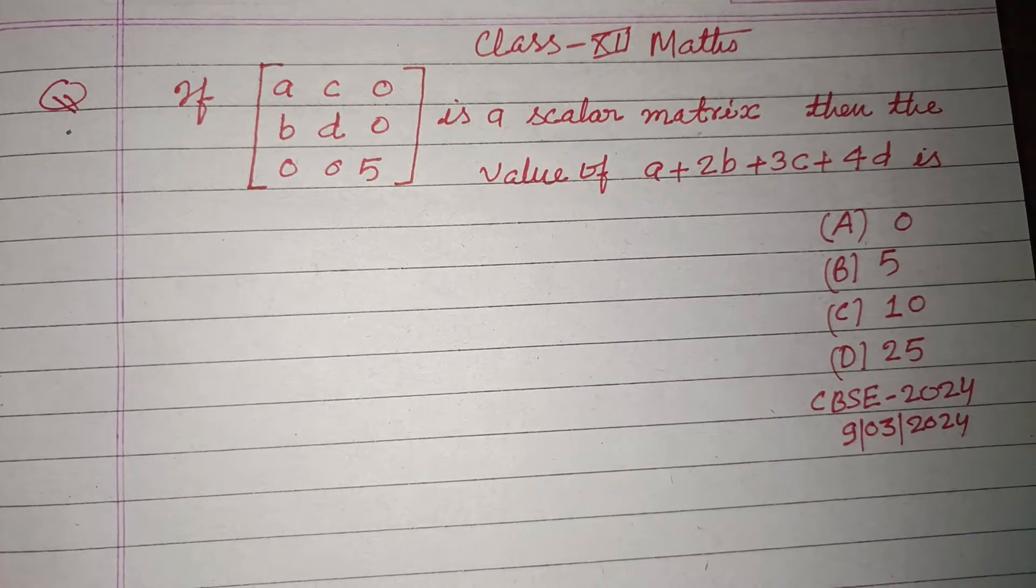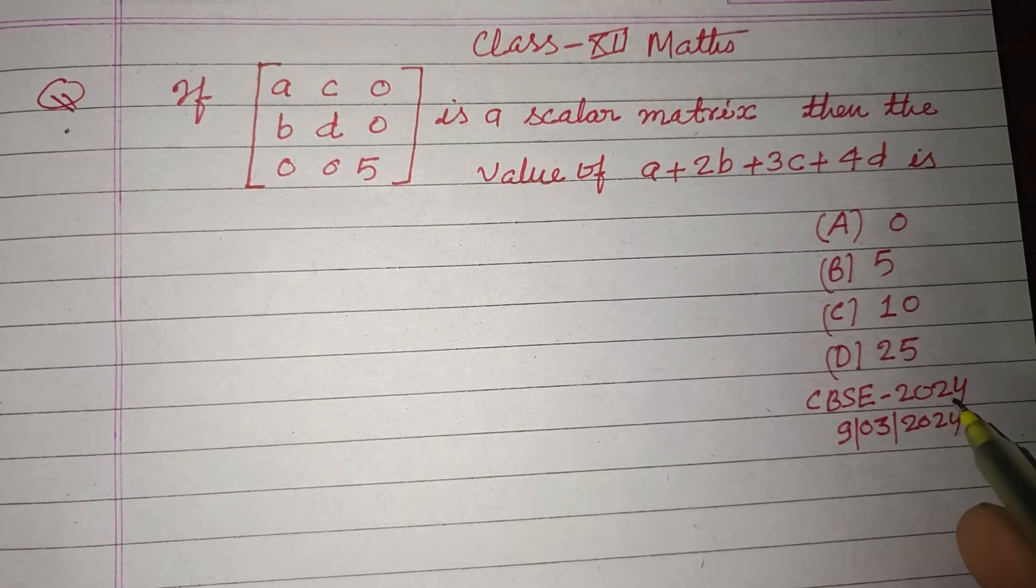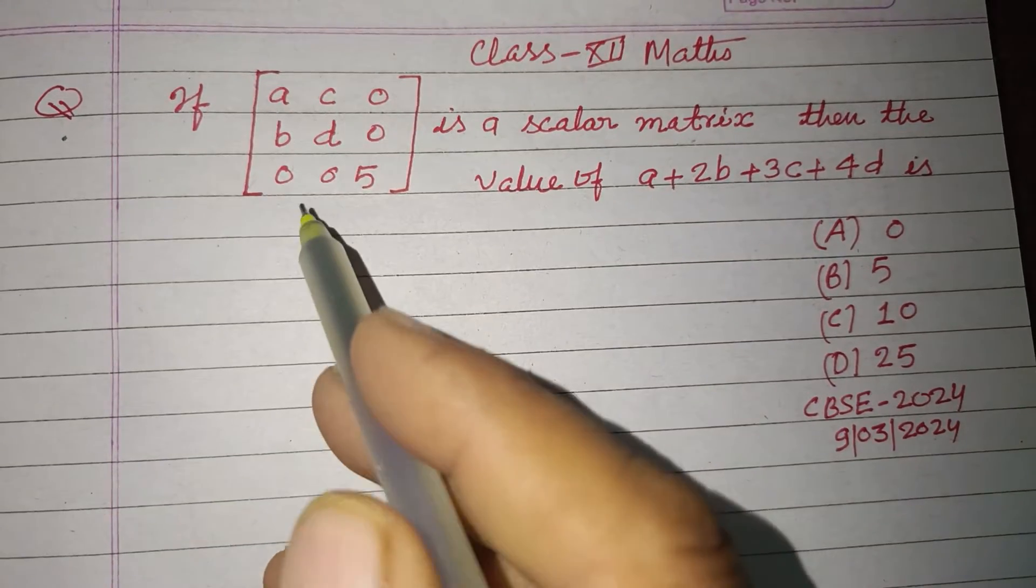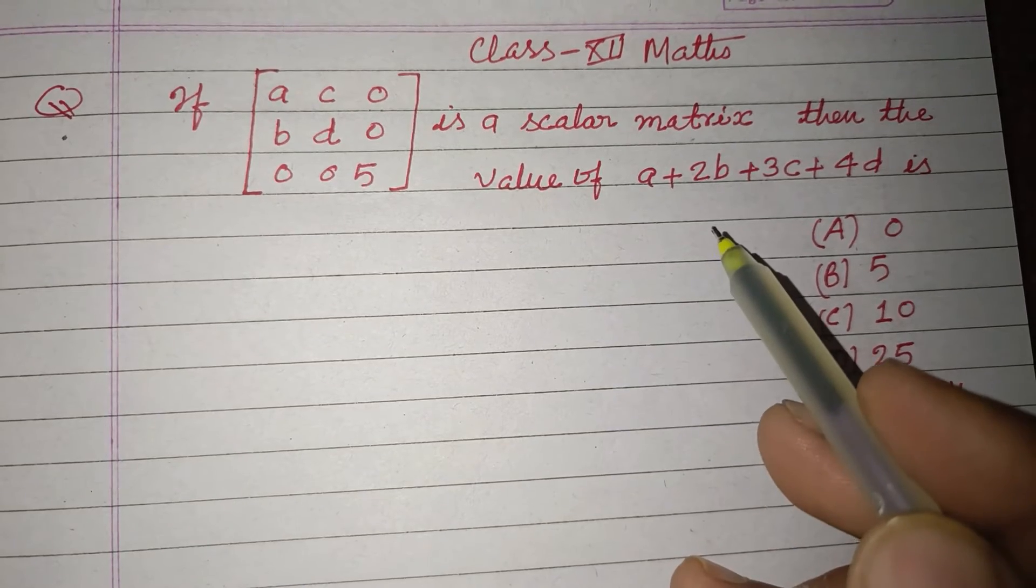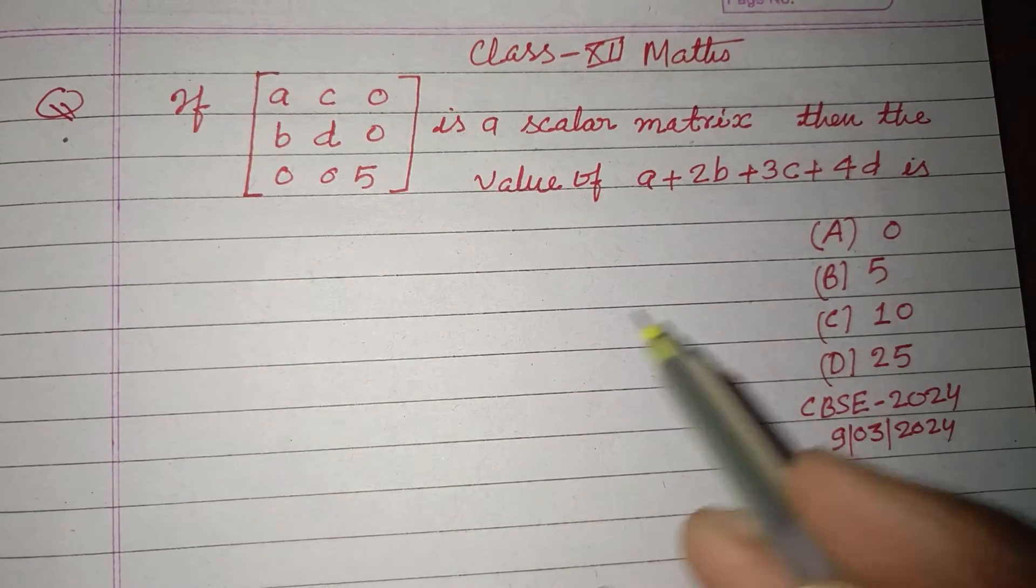Viewers, warm welcome to this YouTube channel. This is a question from CBSE Board Exam 2024: If the given matrix is a scalar matrix, then the value of a + 2b + 3c + 4d is...